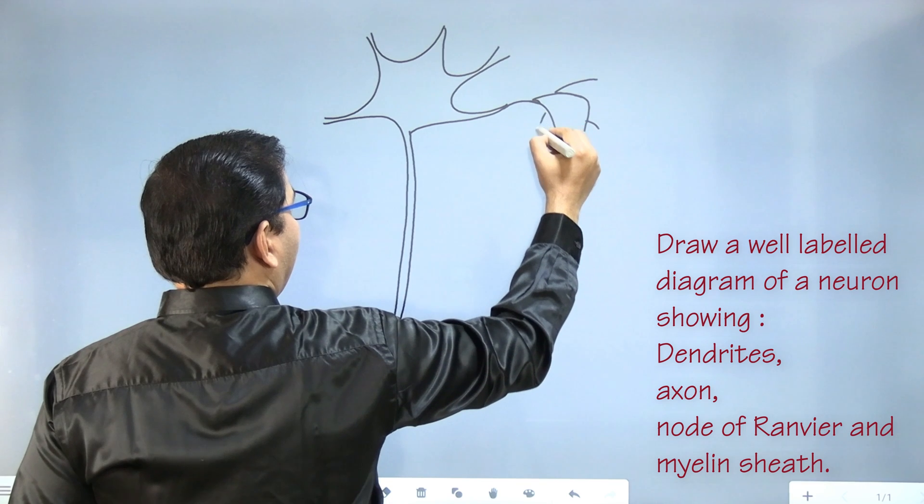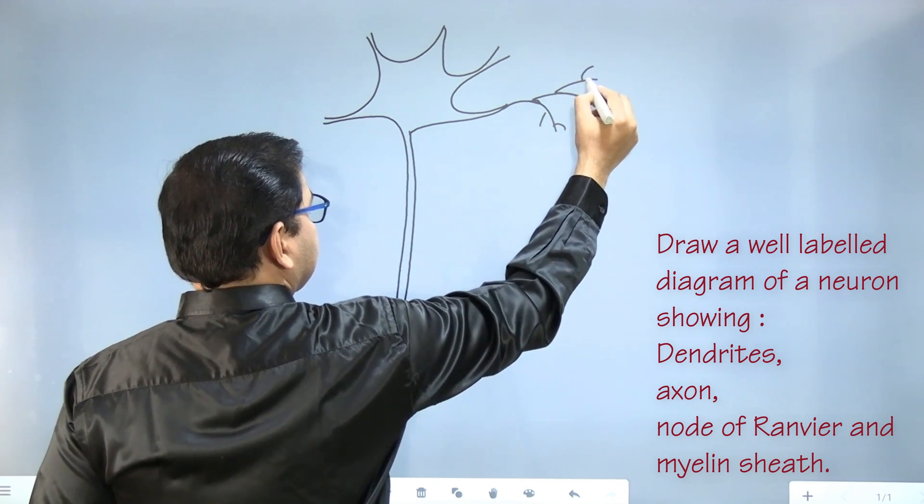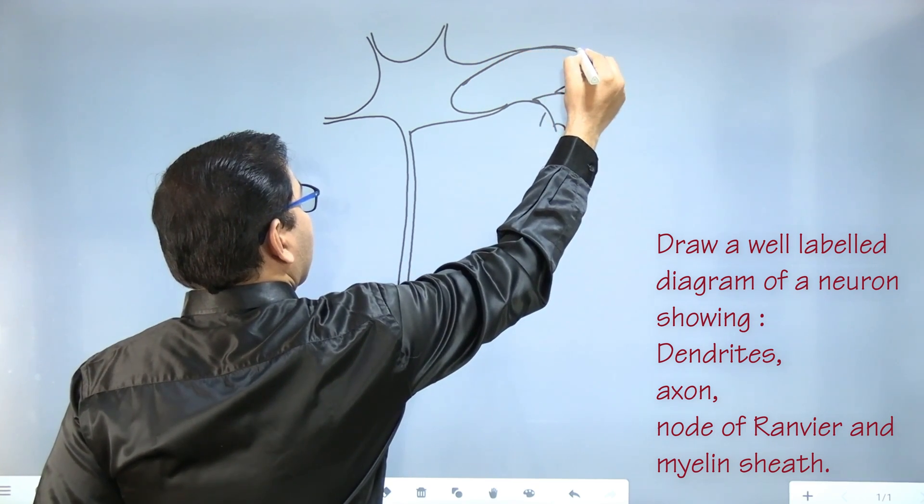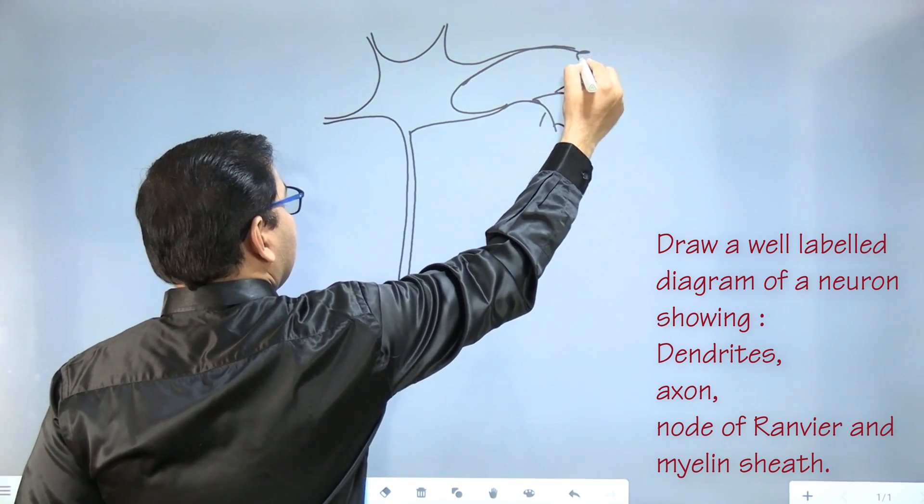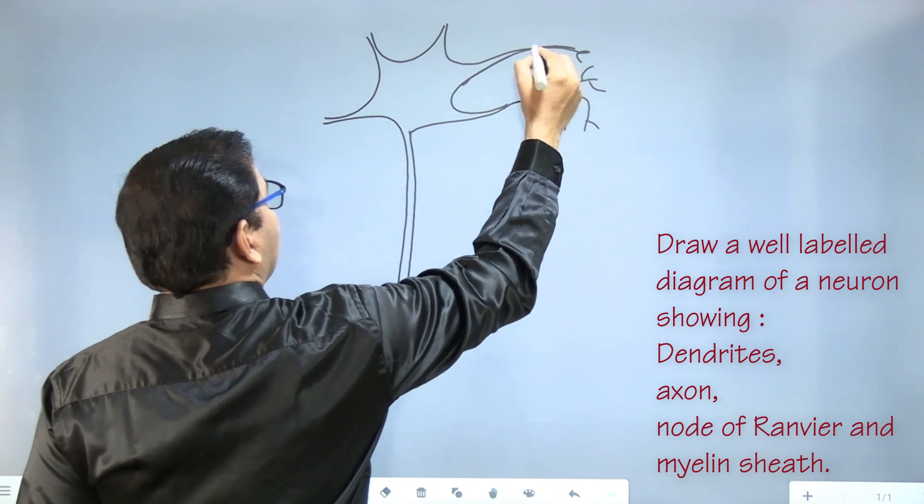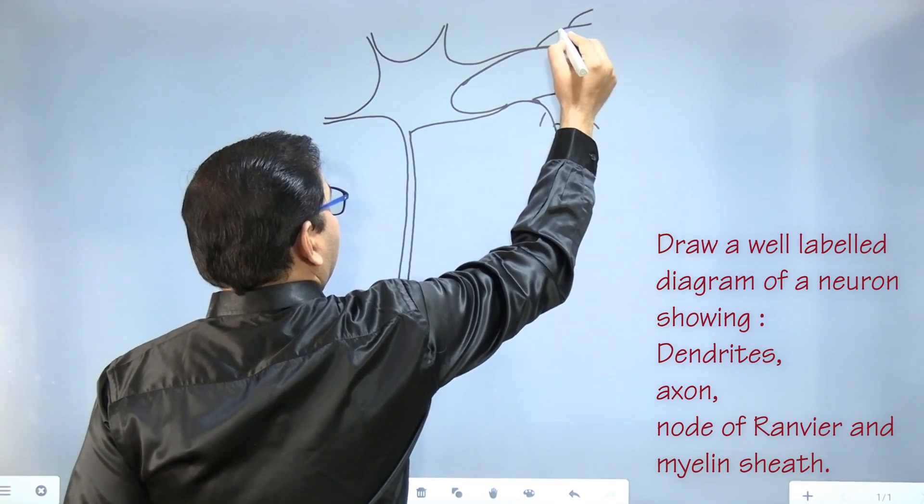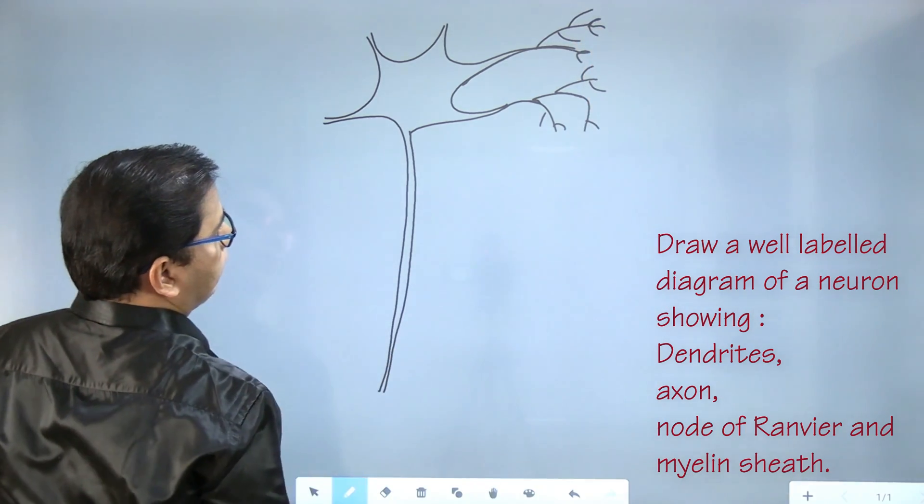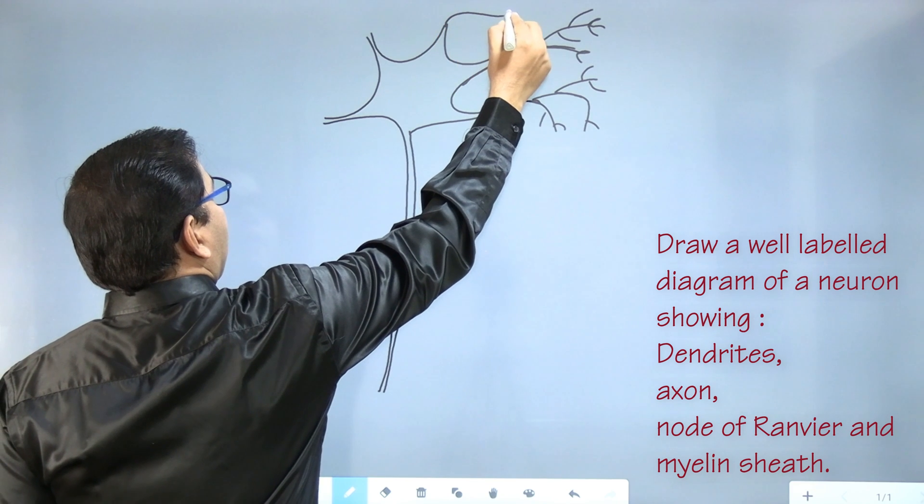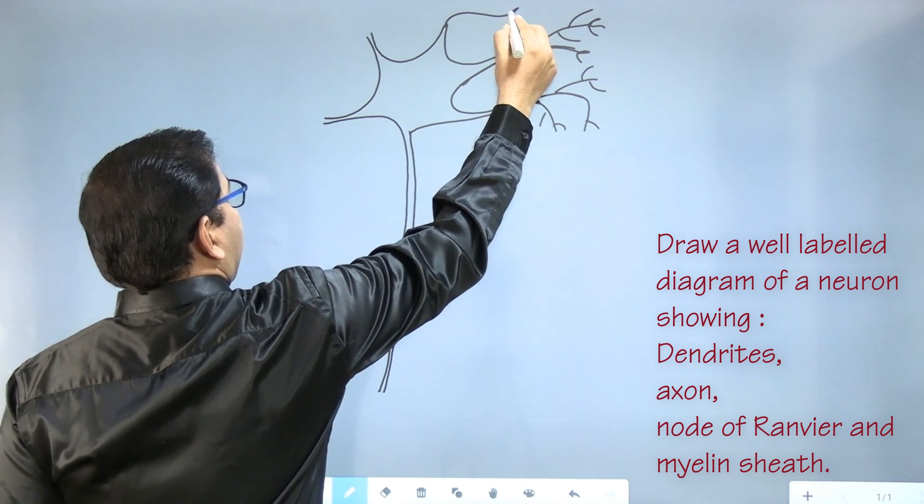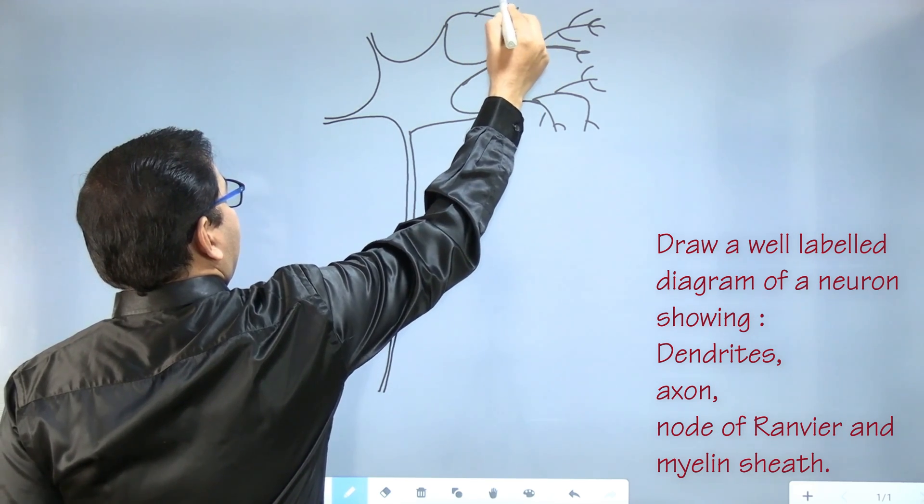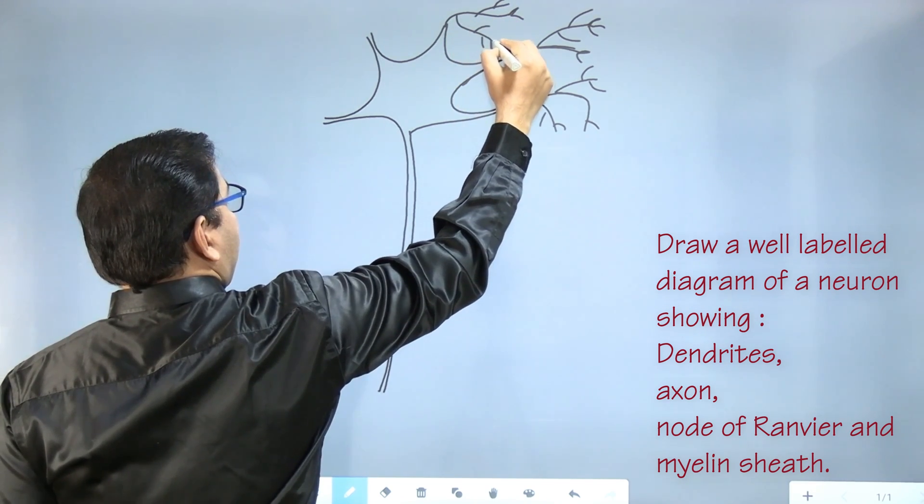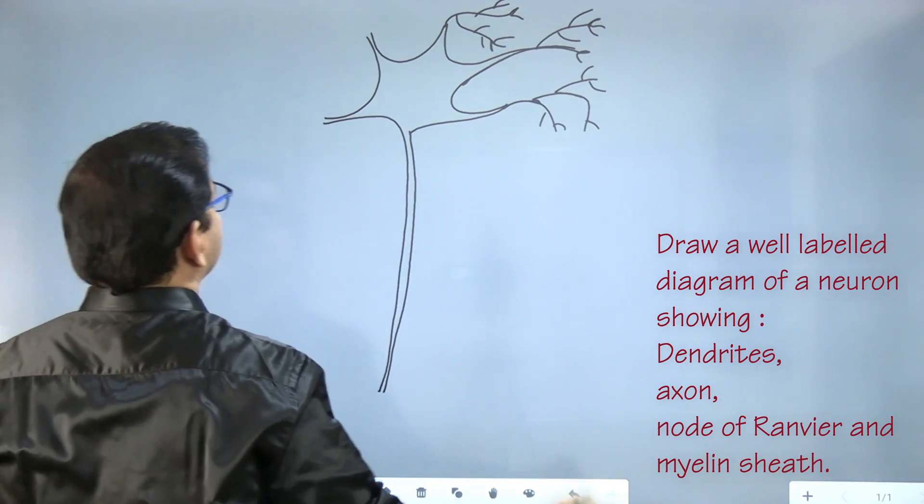And what are we drawing now? These are dendrites. At the end, these two branches, then one branch here. At the end you can show two or three branches like this.